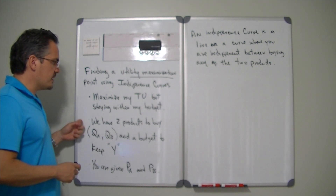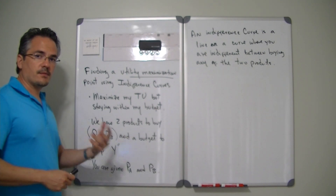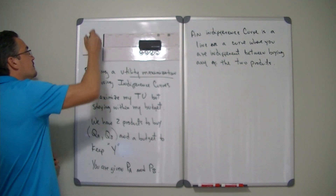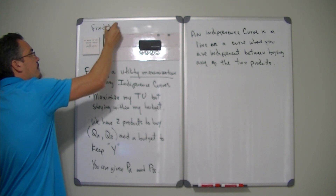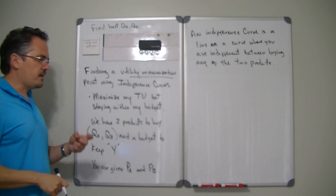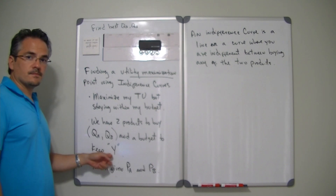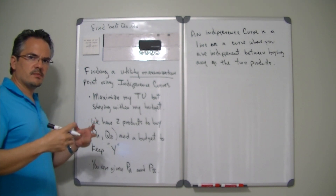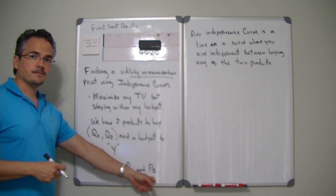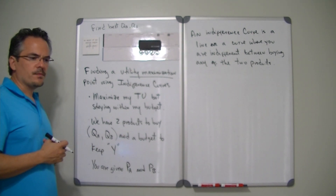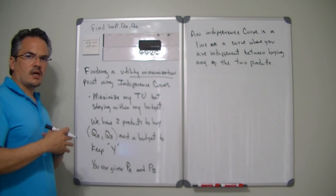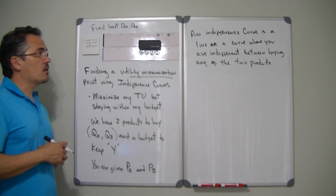So we're going to have two products that you want to buy — product A and product B. We represent the maximization point as QA, QB, so we want to find the best QA, QB point to purchase. In order to find that point we are given a budget, which we'll call Y — a level of income you can spend on these two individual products — along with a price for A and a price for B. If you went through the algebra example on how to find utility maximization, you would notice that it takes a fairly long time to figure out. Usually graphs work a little bit better.